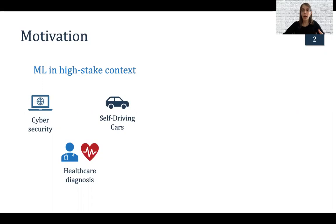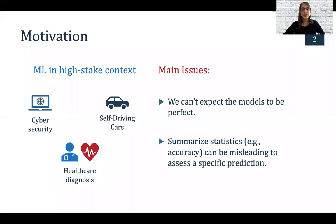The main issue in these settings is that we have high stakes. Whenever we make a mistake, it can have a huge impact on human life. We want models that have really good predictions, but we can't expect models to have perfect predictions because the data we have is not perfect. Also, summarized statistics can be very misleading to assess a specific prediction.